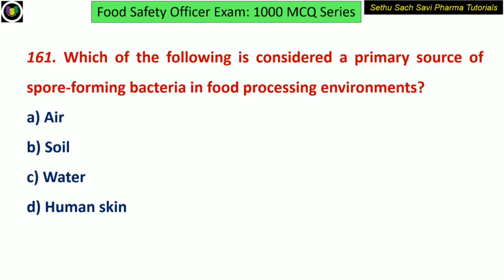Starting with the first question of the day: which of the following is considered a primary source of spore-forming bacteria in food processing environment? Is it air, soil, water, or human skin? The answer is soil.